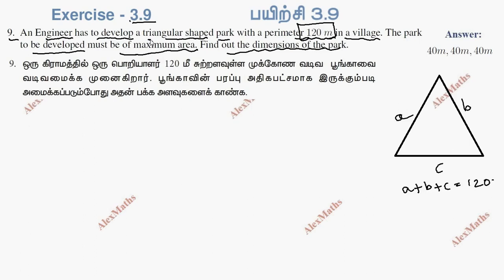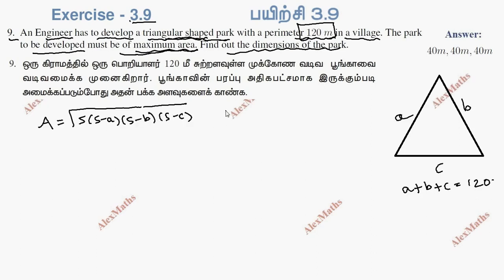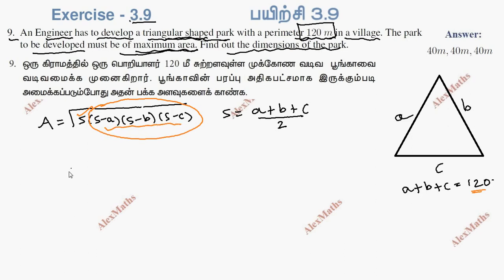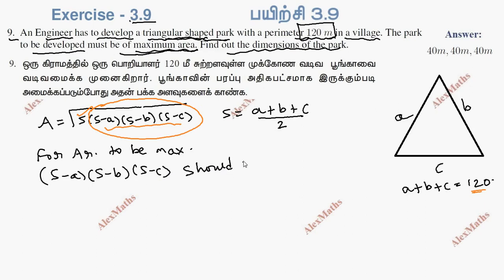This is how to construct the triangular shaped park for maximum area. The area formula — Heron's formula — is used, where s equals a plus b plus c divided by 2, the semi-perimeter. This area would be maximum when the value of (s minus a) into (s minus b) into (s minus c) is maximum.